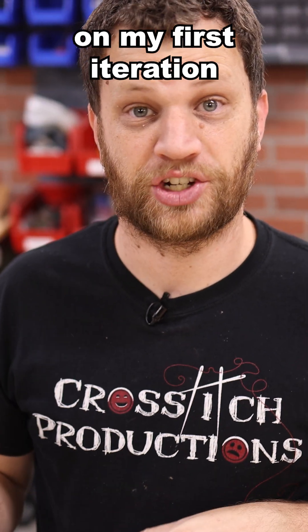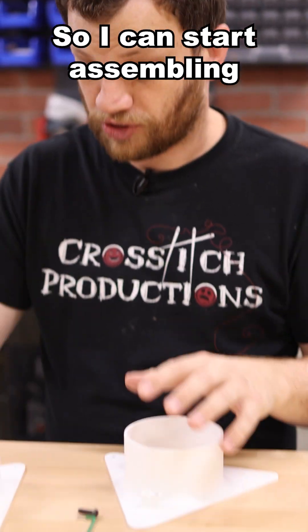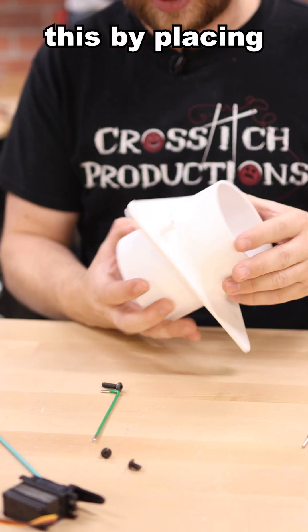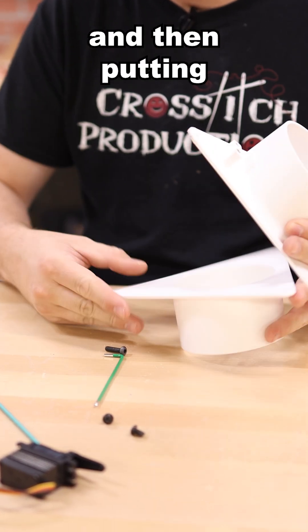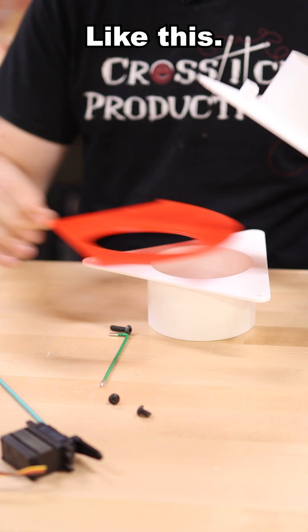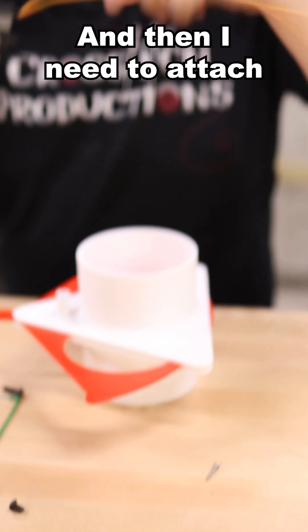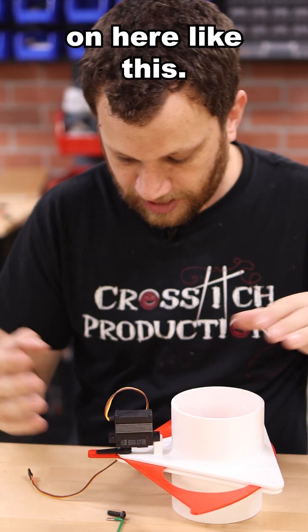Here's what I've come up with on my first iteration of 3D printing. I can start assembling this by placing these pieces together and then putting the blast gate in between, and then I need to attach the servo motor on here like this.